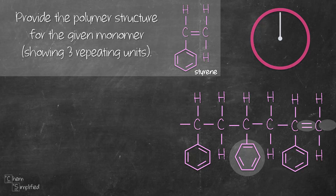The third and final error is here — in order to indicate that this is a polymer structure, we need to show open-ended bonds on both ends. On the left-hand side we do have an open-ended bond, however it's missing the open-ended bond on the right-hand side. So altogether there are three errors, and these are common mistakes made when drawing the structure of this polymer.